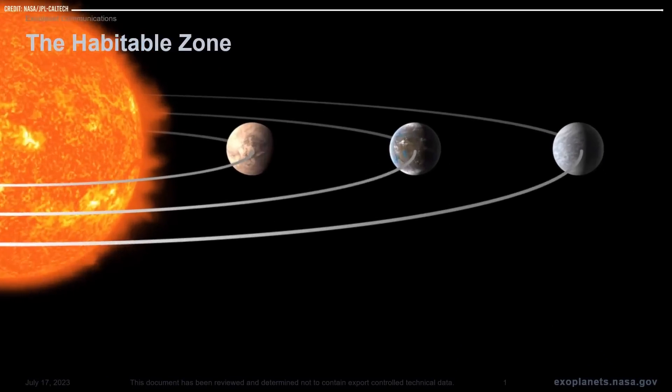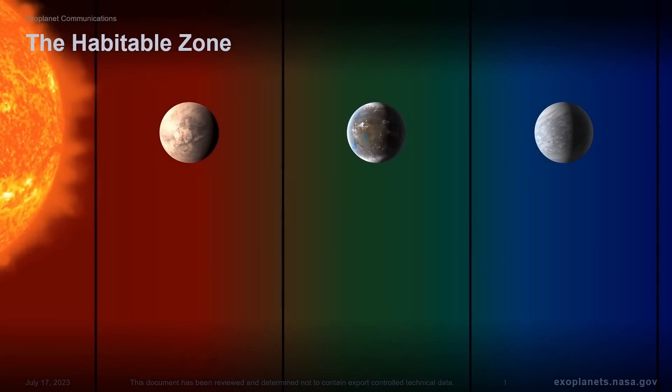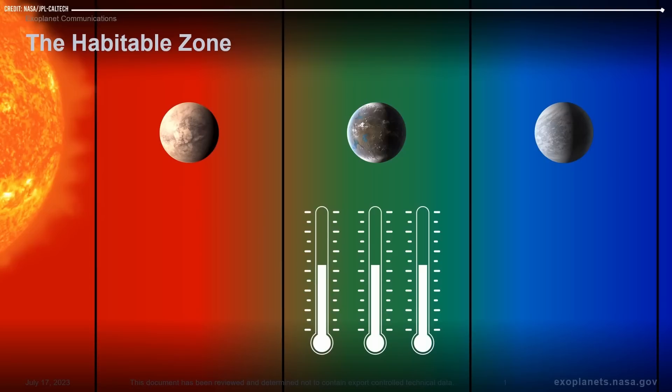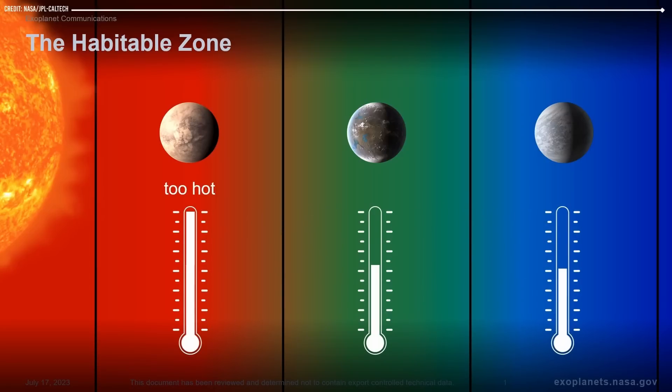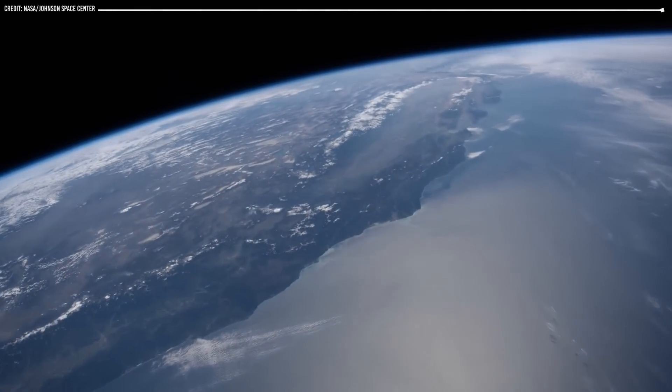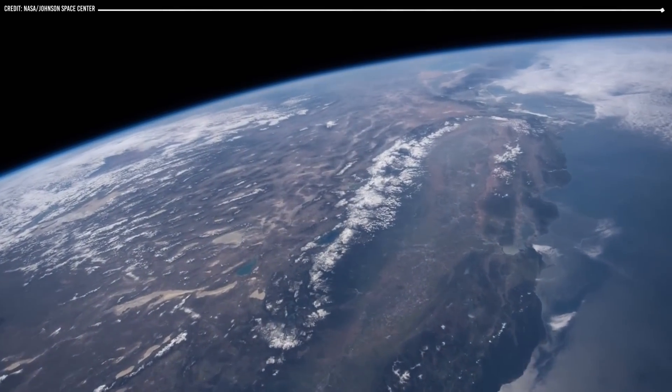If Earth were located closer to the sun like Venus, it would be too hot for liquid water to exist on its surface, while if it were located further away like Mars, it would be too cold. Earth's atmosphere has also played a key role in its ability to support life.